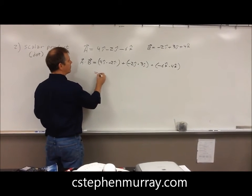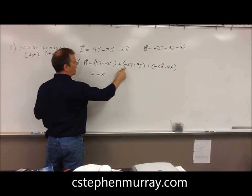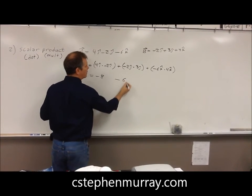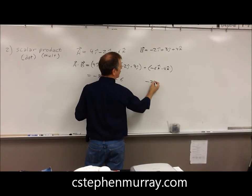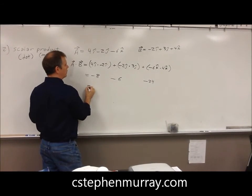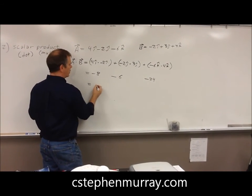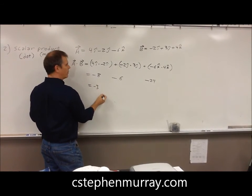This gives me four times negative two, negative eight, negative six, negative 24. That gives me... so that gives me negative 38.